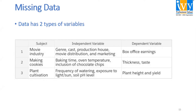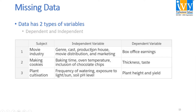Data has two types of variables: dependent and independent. As we can see on screen, there's a subject, an independent variable, and a dependent variable. The subject is the movie industry. The independent variables are those not dependent on anyone — genres, cast, production house, movie distribution and marketing. What is dependent on all these is the box office earnings.